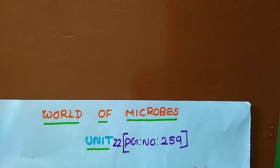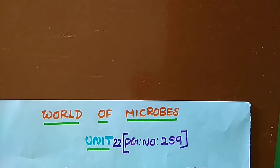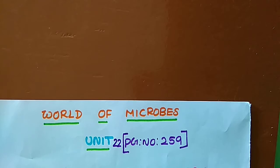In this video, we are going to start a continuation of a virus. The lesson topic is World of Microbes, Unit 22, page number 259. In the last video, we were discussing the structure of bacteria and viruses. In this video, we are going to continue with the characteristics of viruses.